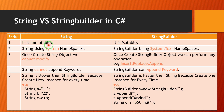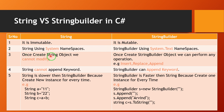The first difference: String is immutable and StringBuilder is mutable. The second difference: String uses the System namespace, while StringBuilder uses the System.Text namespace.